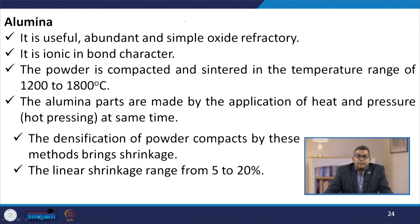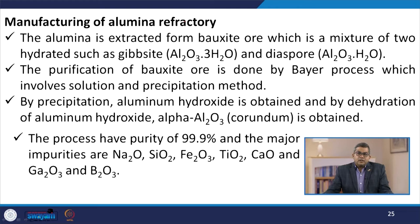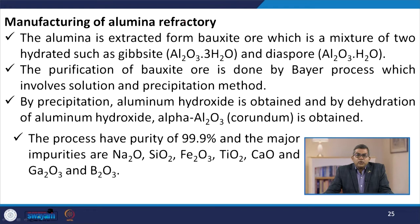Alumina is a useful, abundant, and simple oxide refractory that is ionic in bond character. The powder is compacted and sintered in the temperature range of 1200 to 1800°C. Alumina parts are made by application of heat and pressure simultaneously. Linear shrinkage ranges from 5 to 20%. Alumina is extracted from bauxite ore — a mixture of two hydrates, gibbsite Al2O3·H2O and diaspore Al2O3·H2O — purified by Bayer's process, yielding aluminium hydroxide and then alpha-Al2O3 (corundum) by dehydration.